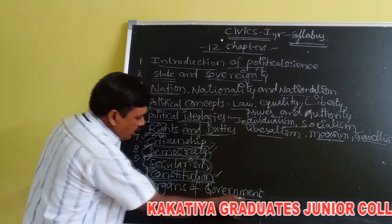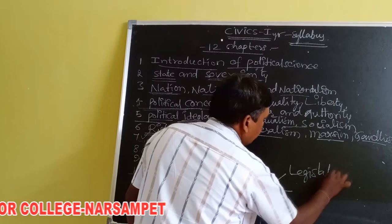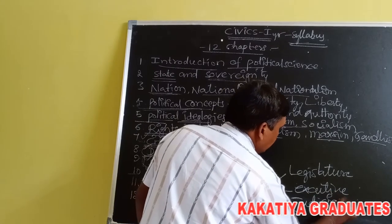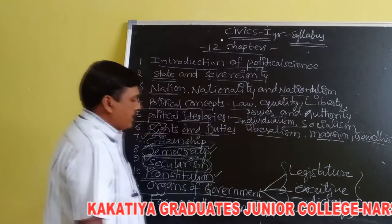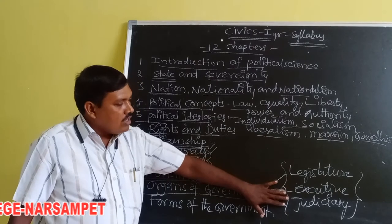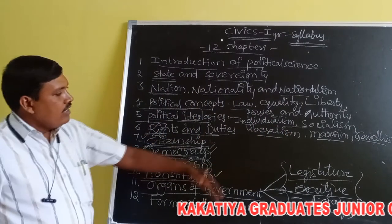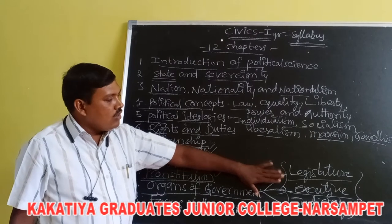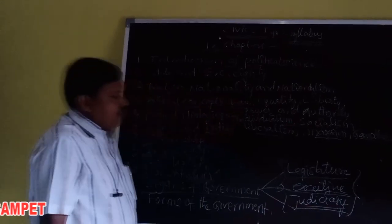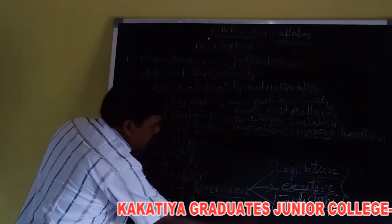The eleventh chapter is Organs of Government. The government has three major organs: Legislature, Executive, and Judiciary. We will learn what each organ means, how they function, and how they carry out their duties in a country. Topics include unicameralism, bicameralism, and the merits and demerits of the legislature, executive, and judiciary, including judicial review.